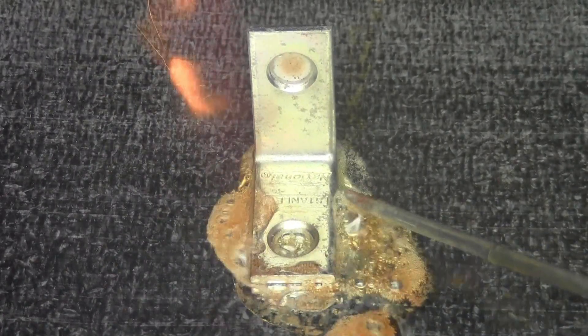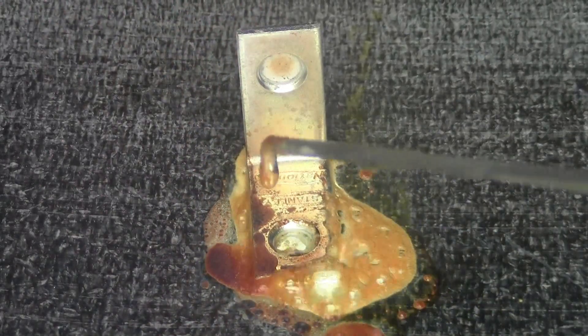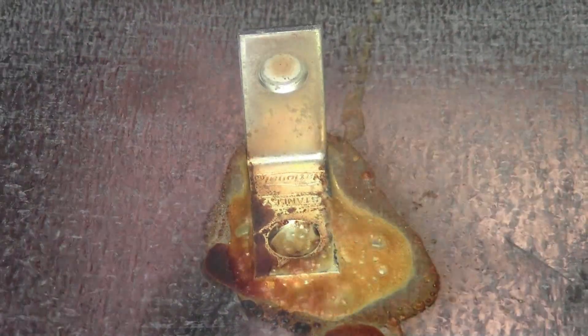When you see the flux bubbling and turning brown, it's time to add your rod. Be careful not to turn the flux black. Turning the flux black will actually inhibit the flow.